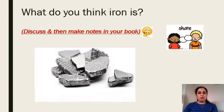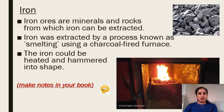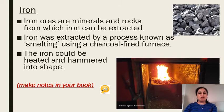For this slide, I would like you to write down what you think iron is. Some of you may already know because you've heard of the word before. So have a think and pause the video here. Iron ores are minerals and rocks from which iron can be extracted. Iron was extracted by a process known as smelting, which used a charcoal-fired furnace. The iron would be taken from the rocks by heating it up, and then the iron could be heated and hammered into shape. Remember, iron is a type of metal and it is very strong, and that was why it was used so widely during the Iron Age — because the discovery of iron really changed the culture of the time. Pause the video here to make some more notes.